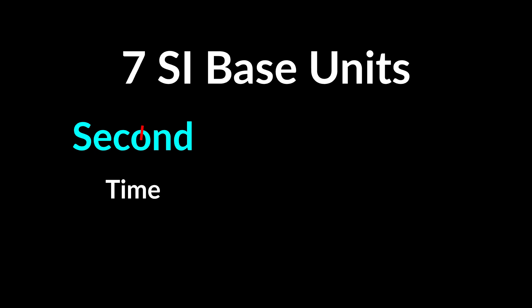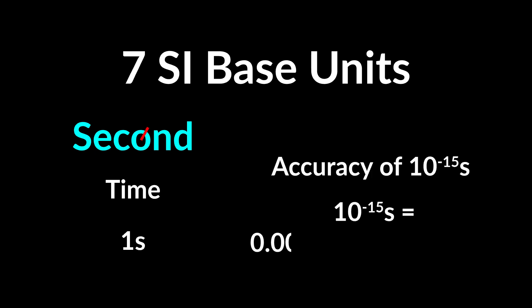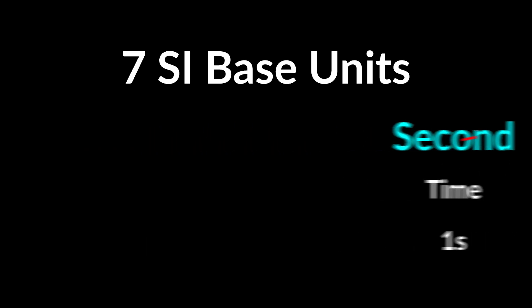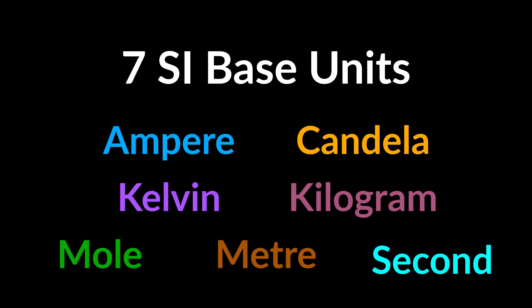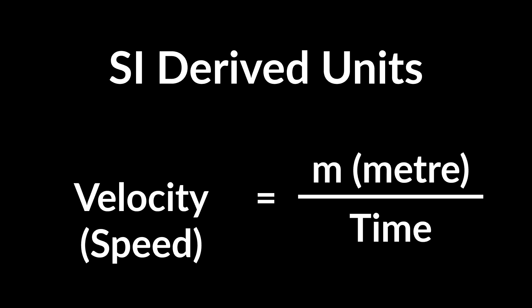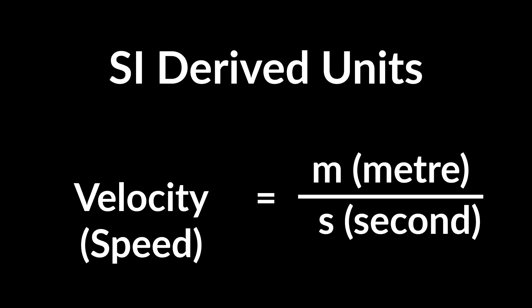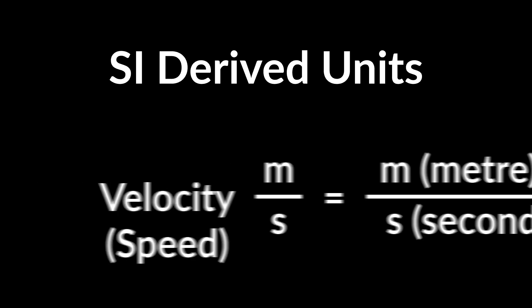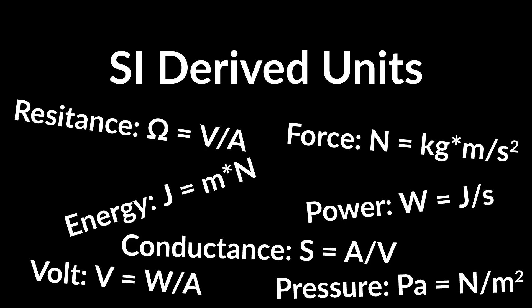And last but not least: second, for measurement of time — the unit scientists can currently measure most accurately. Now we have our base units, and they're called base units because, as far as we know, they can't be broken down into other units. The SI also has derived units made up of those base units, like velocity or speed, which is distance over time. Because distance is meters and time is seconds, the derived unit for velocity is simply meters per second.